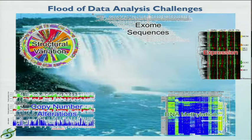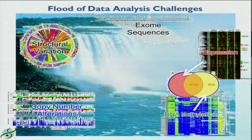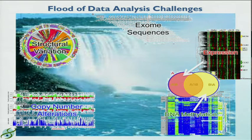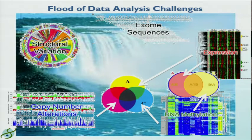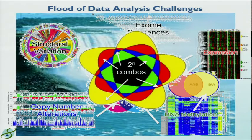When you participate in these projects, you often want to do lots of different types of comparisons — from comparing expression to methylation to figure out why something is not expressed, or looking at copy number, expression, and methylation altogether. This quickly gets out of control. You have lots of combinations of things you want to look at, and it can be overwhelming.